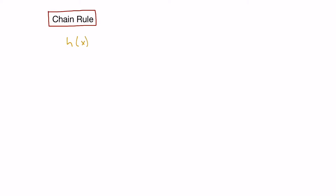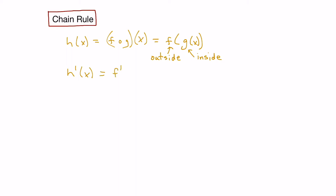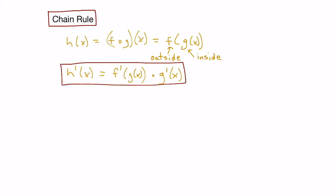The chain rule is a very handy rule used to differentiate composite functions. If h of x is a composite of functions f and g, we can write it as f of g of x. We think of f as the outside function and g as the inside function. The chain rule states that the derivative of h of x is the derivative of the outside function times the derivative of the inside function, as long as f and g are themselves differentiable.